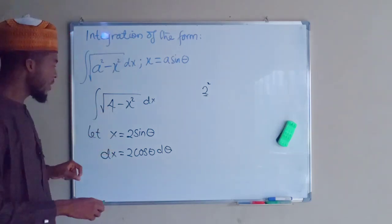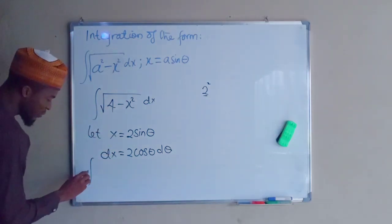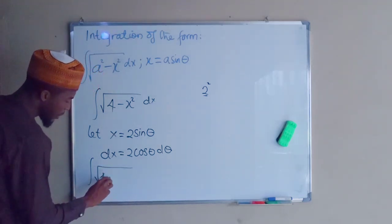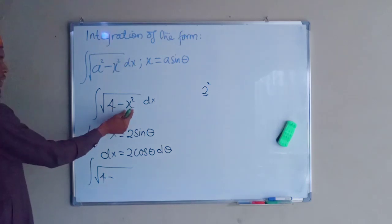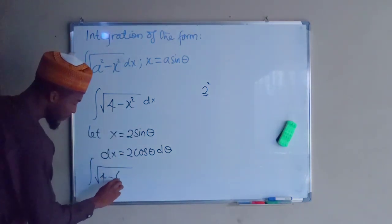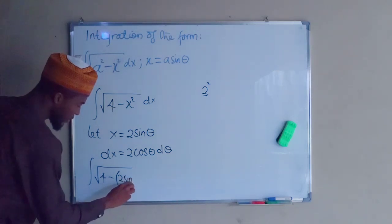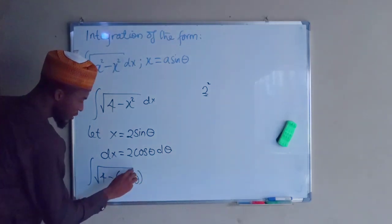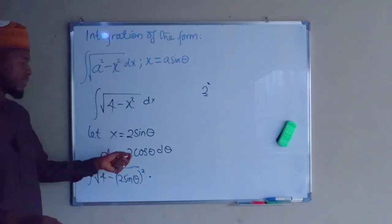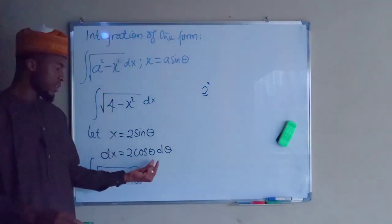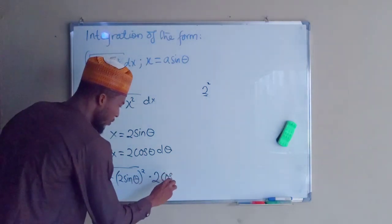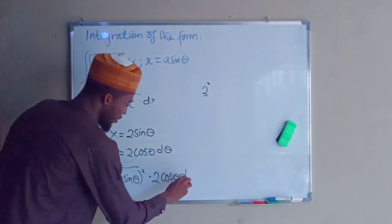We are going to substitute this into the main integration. This becomes the square root of 4 minus x squared, where we have let x equal to 2 sine theta, so we have 2 sine theta squared, and dx is now equal to 2 cos theta d theta.